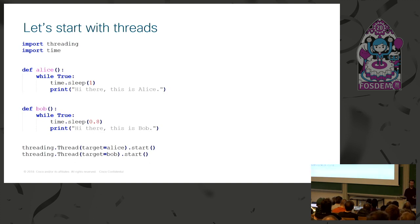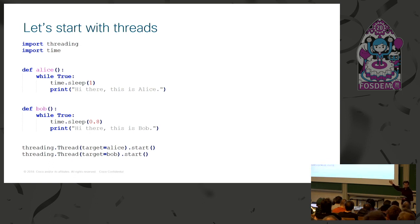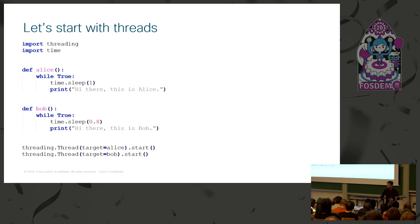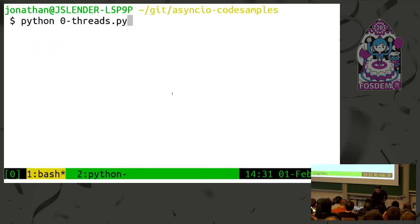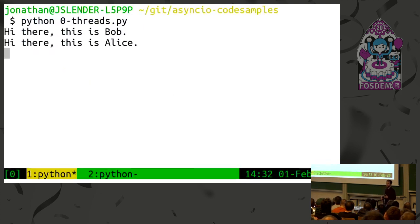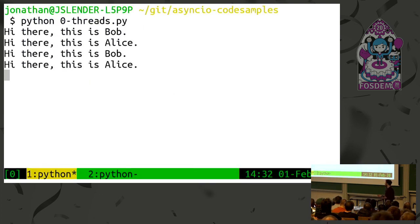Threading is pretty easy. You define two functions — in this case Alice and Bob — then you create two threads, specifying the target as Alice and then Bob, and you start them. When you execute this, you see these two things running concurrently with both print statements nicely interleaved.